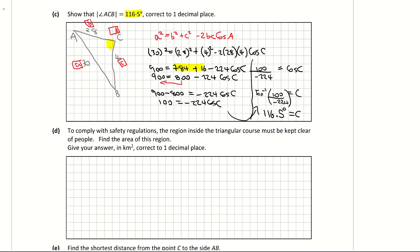Looking at part d: to comply with safety regulations, the region inside the triangle must be kept clear. Find the area of this region. We don't know the perpendicular height, so I can't use ½ × base × height directly. Instead, I'll use the formula: area = ½ab·sinC, where a = 4, b = 28, and the included angle C = 116.5 degrees.